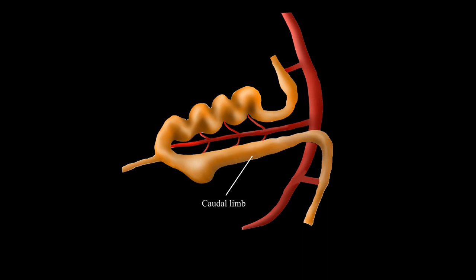The caudal limb of the midgut, now on the left side of the umbilical cord, grows a small cecal bud, ultimately becoming the cecum and appendix of the colon.